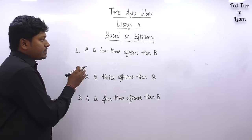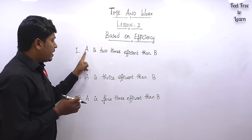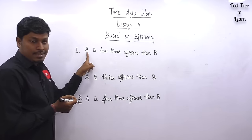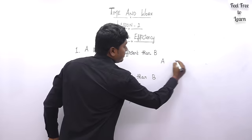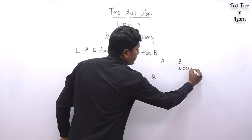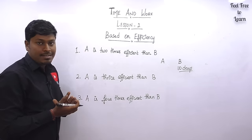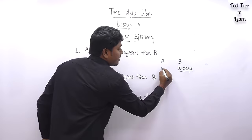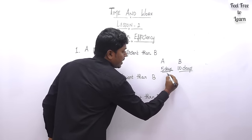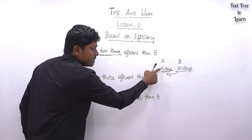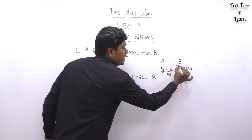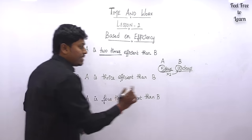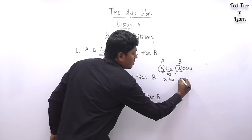Point number one: A is two times efficient than B. There are two persons, A and B. For example, if B completes a task in 10 days, how many days will A take? If A is two times efficient, then A will complete the work in 5 days, because 5 into 2 equals 10. So if B completes a task in 10 days, A will complete it in 5 days. In terms of x: if A is x days, then B should be 2x days.